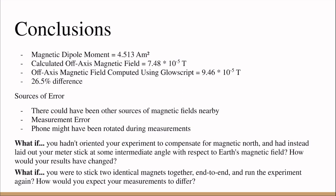The off-axis magnetic field computed using GlowScript equals 9.46 times 10 to the negative 5 Tesla, and by using the percent difference formula, I found that these two values had a 26.5 percent difference.